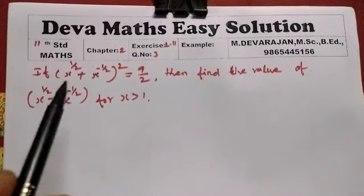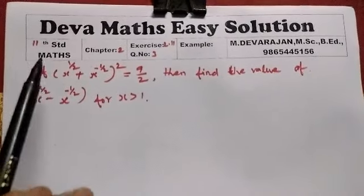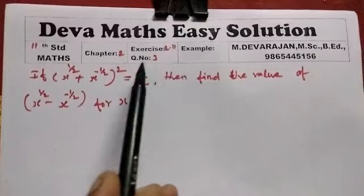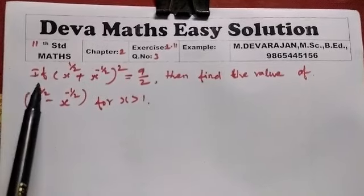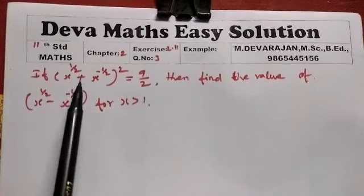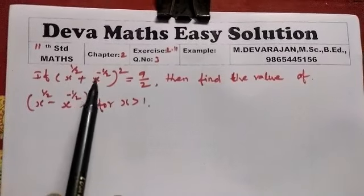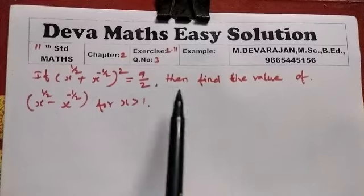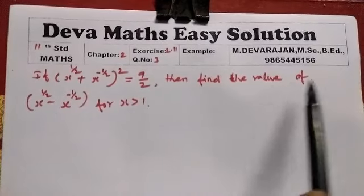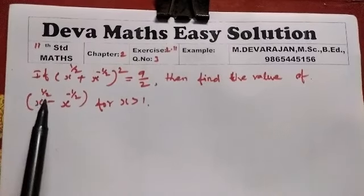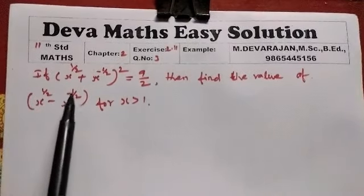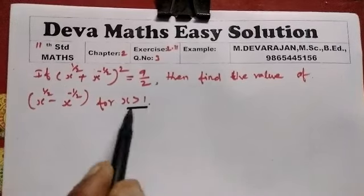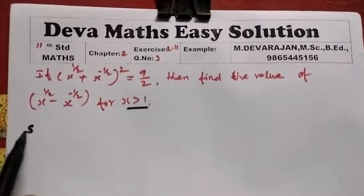Hi everyone, this is Deva. Now we are going to see Launcher Mac Chapter 2, Exercise 2.11, Question 3. If x to the power 1/2 plus x to the power minus 1/2, whole square, equals 9/2, then find the value of x to the power 1/2 minus x to the power minus 1/2, for x greater than 1.